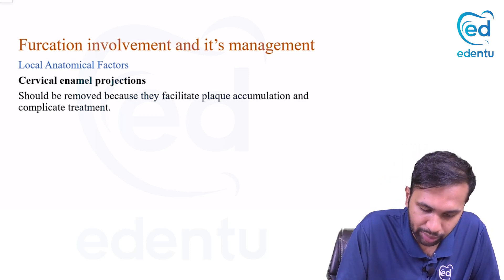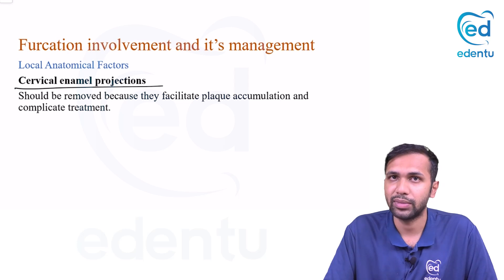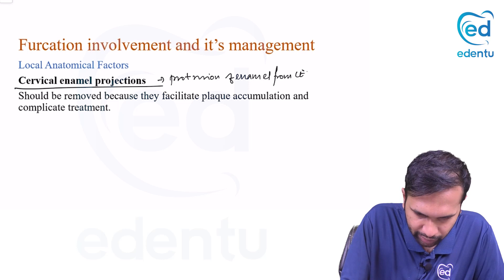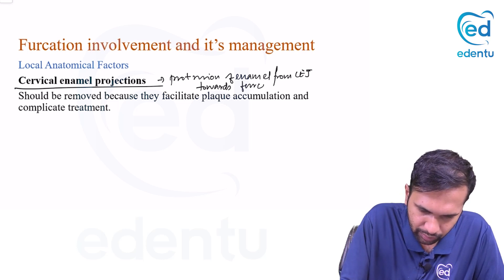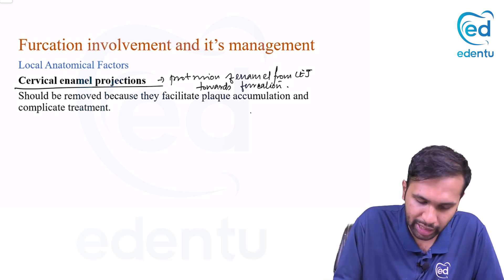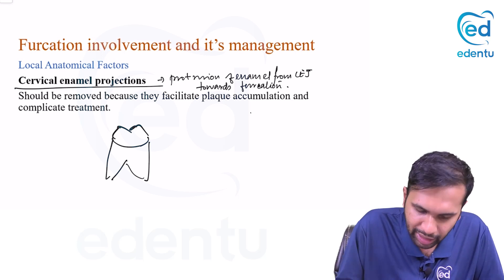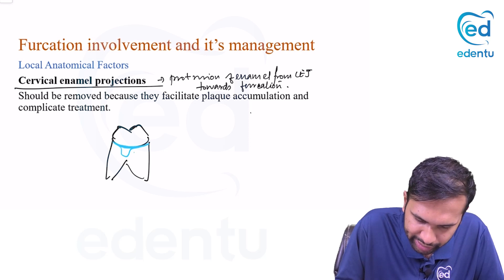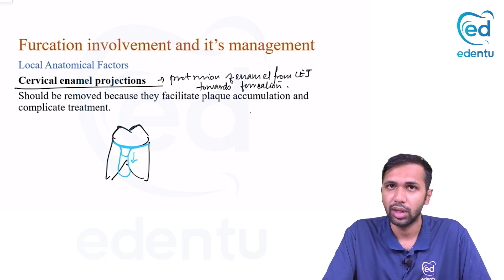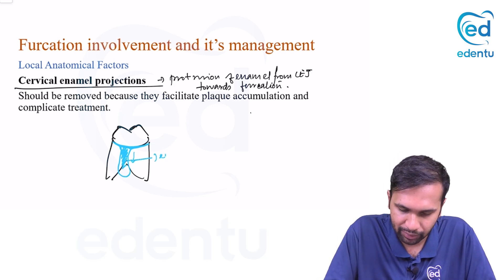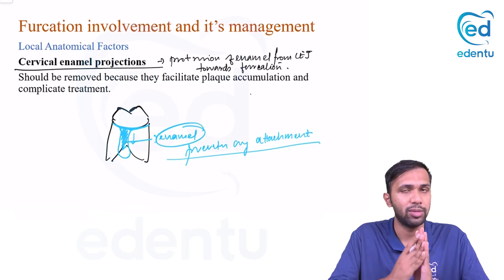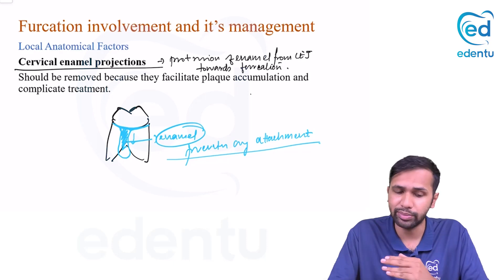Cervical enamel projections are an important topic. As the name suggests, it is the projection or protrusion of enamel from the CEJ towards the furcation region. If the projection is small it is manageable, but if it completely covers the furcation, it prevents access. Moreover, since it is enamel, Sharpey's fibers cannot insert into it, so periodontal attachment is compromised — this further complicates periodontal treatment.